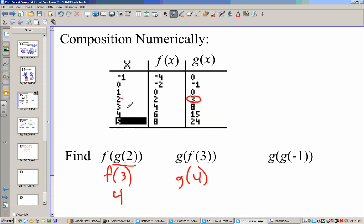g(g(-1)), negative 1 we go over and that's going to be 0. So now I'm finding g(0). So if x is 0, my g value is negative 1. So that brings me back to its original.